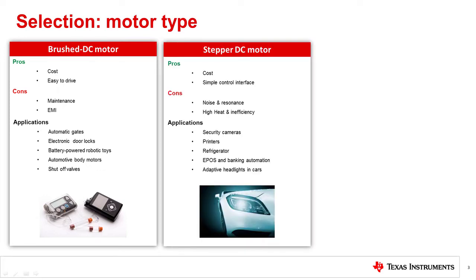Stepper motors are also low-cost motors that have a simple control interface, although not as simple as brushed DC motors. The downsides to using these motors include higher audible noise, resonance effects, high temperature operation, and inefficiency. Despite these disadvantages, stepper motors are excellent for applications that require precise movement or position control.